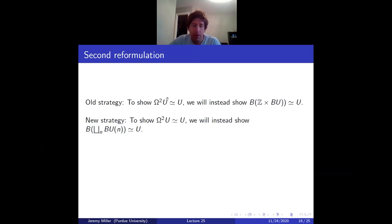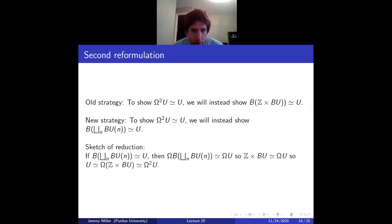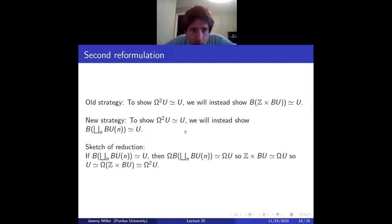Our strategy to prove Bott periodicity: we want to show U ≃ Ω²U, which reduces to showing B(∐ BUN) ≃ U. There's also a theorem: if G acts freely on a contractible space E with the projection E → E/G a fibration, then E/G ≃ BG. So to build a model of BG, find a contractible space with a free G-action and the quotient will be BG.